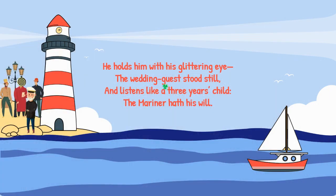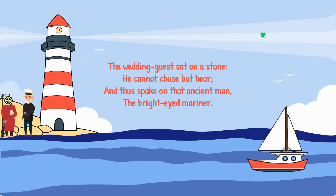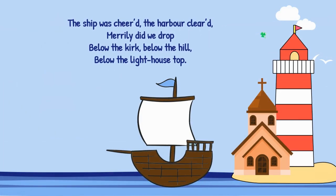He holds him with his glittering eye — he has unhandled him physically but is stopping him still with his glittering eye. Coleridge was familiar with psychological notions; the term psychology was not used at the time, but Coleridge knew techniques of the mind like hypnotism, called mesmerization. Here the mariner mesmerizes the guest with his eyes. The wedding guest stood still and listens like a three-year-old child — the mariner has his will. He cannot choose but hear, and thus spoke on that ancient man, the bright-eyed mariner.